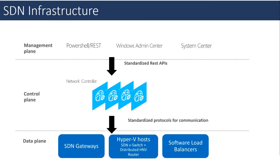On the data plane side, there's the Hyper-V host, which gets all switching and routing policies for virtual networks, as well as quality of service and micro-segmentation policies. All traffic to on-premises networks goes through SDN gateways, which also ship as a server role in the Azure Stack HCI operating system. Finally, the software load balancer component also ships as a server role in the HCI operating system, and all inbound and outbound internet traffic flows through it.